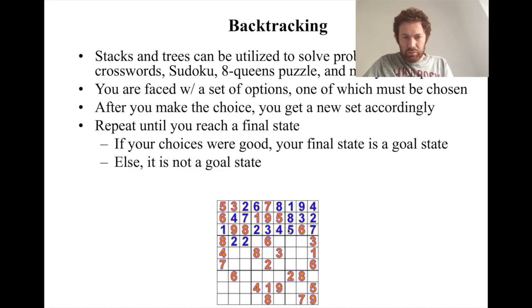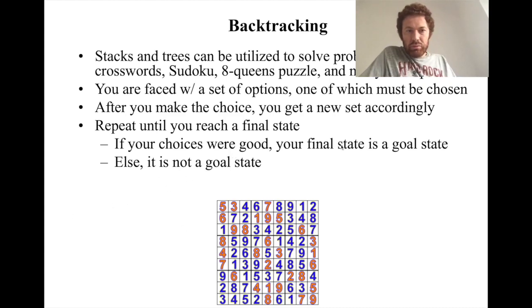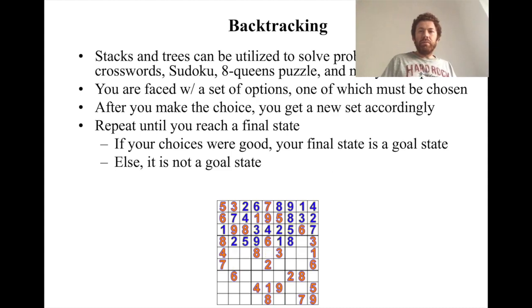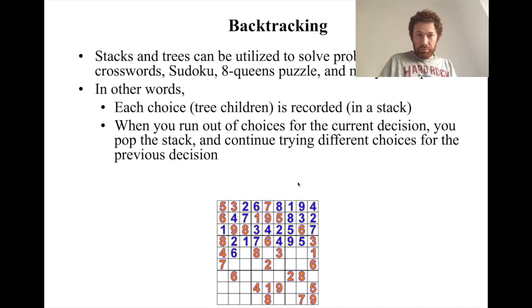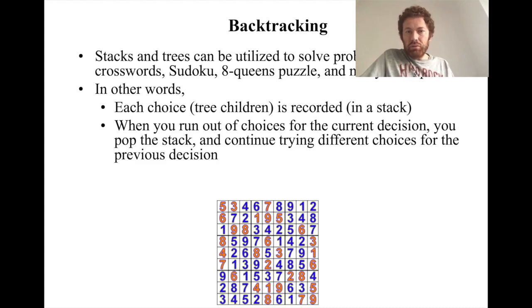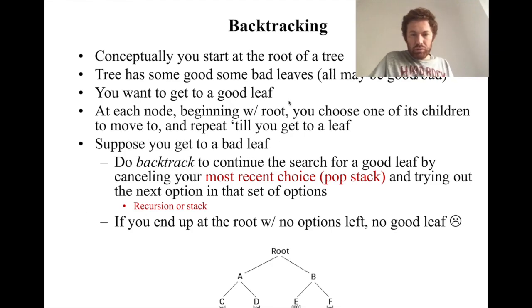Sudoku is similar — the three-by-three windows are filled with unique numbers. Basically, until you reach your final state you look at your choices. If the choices were good, the final state is the goal state; otherwise it's not. So let's talk in terms of trees and stacks: each choice is recorded, and when you run out of choices for the current decision, you pop the stack and continue trying different choices — like different children of a tree for the previous decision.